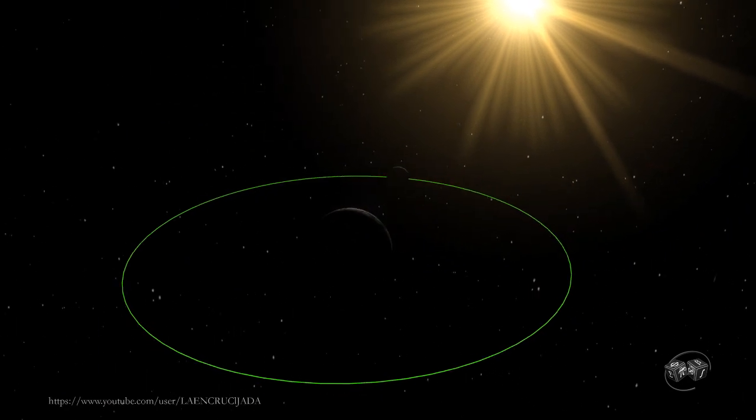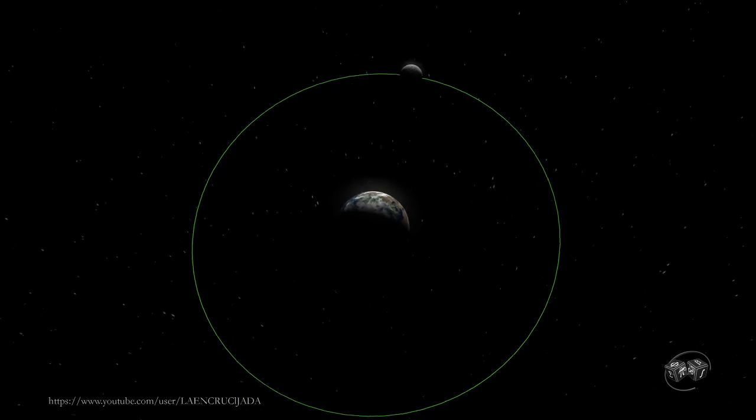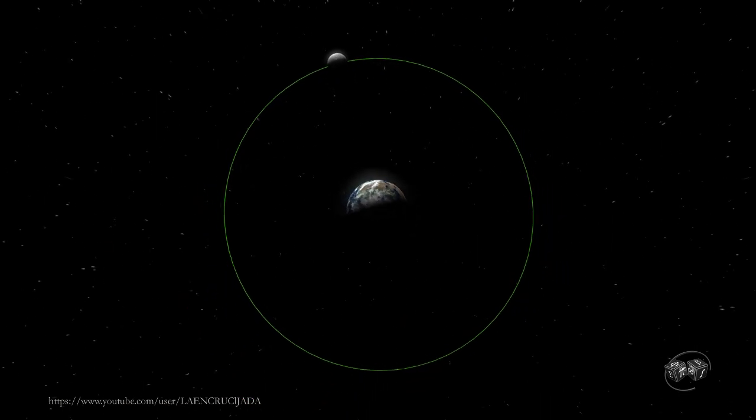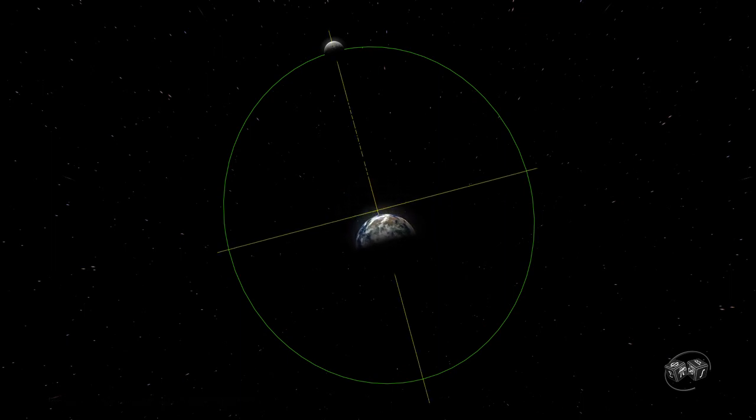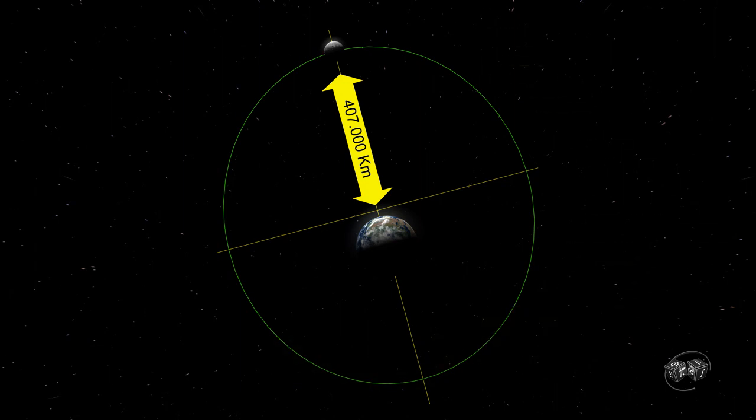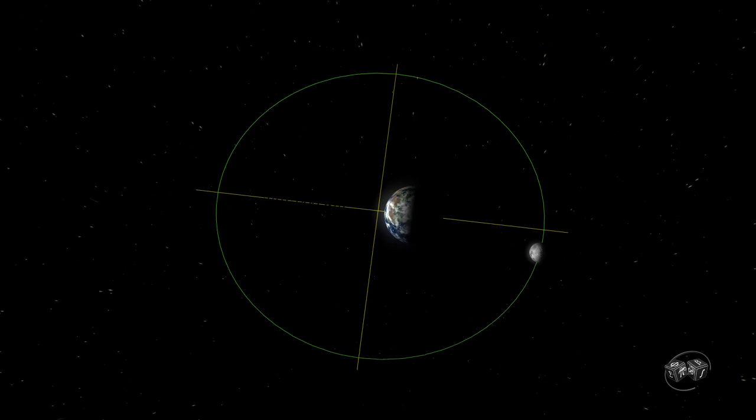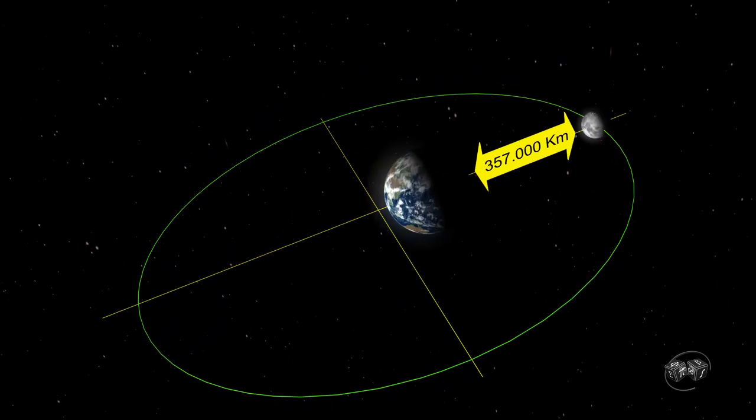For ease of explanation, we have considered so far circular lunar orbit. But the orbit of the Moon is distinctly elliptical with an average eccentricity, where the Earth is not located in the center. Such that there is distance at apogee approximately to 407,000 kilometers. And distance at perigee equivalent to 357,000 kilometers.